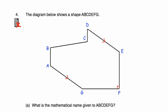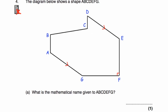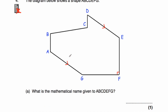Question number four: shown below is the shape ABCDEFG. What's the mathematical name given to the shape? It's got one, two, three, four, five, six, seven straight sides. So it's a heptagon.